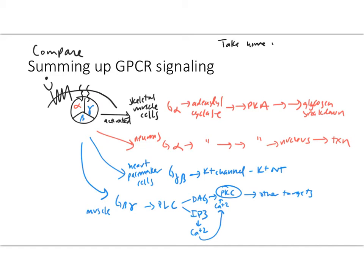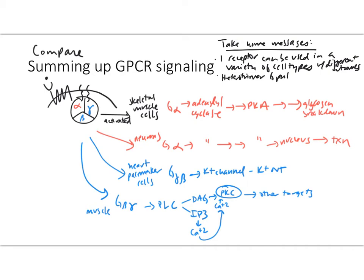I'll just write down a couple of those take-home messages. One receptor can be used in a variety of cell types with different outcomes. We can see how this heterotrimer G protein can lead to a variety of events.